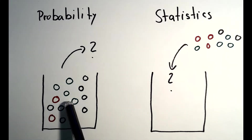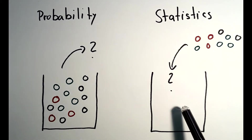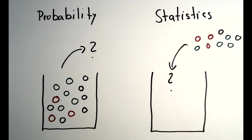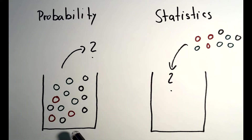The first bucket illustrates the concept of probability and the second bucket illustrates the concept of statistics. Suppose that in the first bucket you have a bunch of balls of different colors — green, black, and red — and you also know how many of each color are there. Probability theory tells you the expected number of green, red, and black balls in your hand after pulling out a bunch of balls from the bucket, and will also tell you the likely distribution of colors.